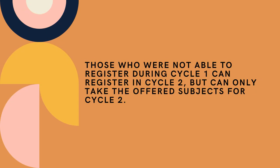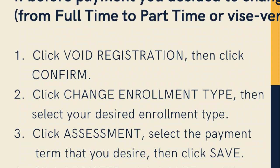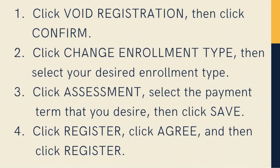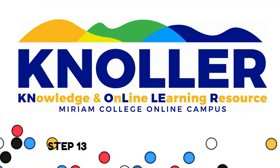Only those students who opted for the part-time cycle 1 enrollment type will be allowed to continue to cycle 2 registration. Also, those who are not able to register during cycle 1 can register in cycle 2 but can only take the offered subjects for cycle 2. If before payment you decided to change your enrollment type from full-time to part-time or vice versa, you can do the following: 1) Click Void Registration, then click Confirm. 2) Click Change Enrollment Type, then select your desired enrollment type. 3) Click Assessment, select the payment term that you desire, then click Save. 4) Click Register, click Agree, and then click Register.